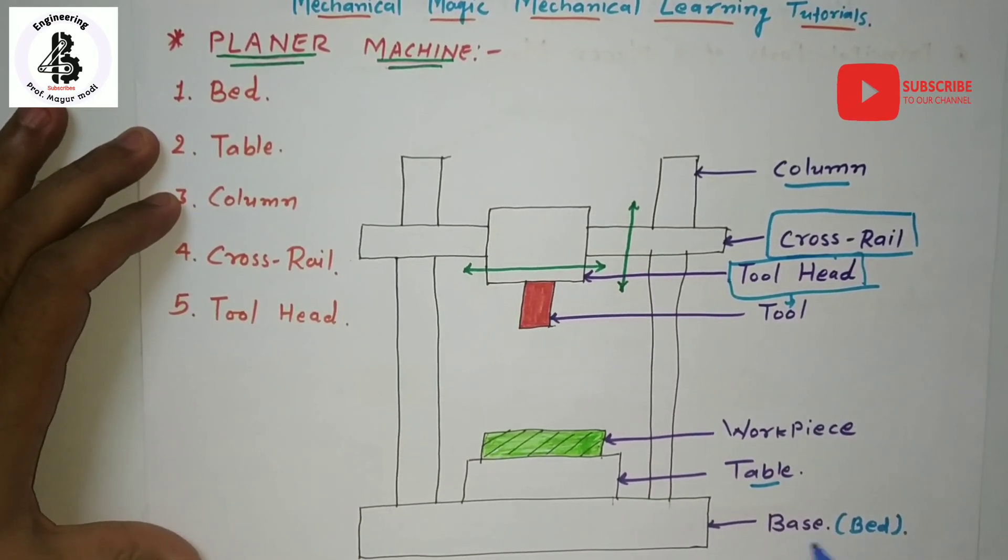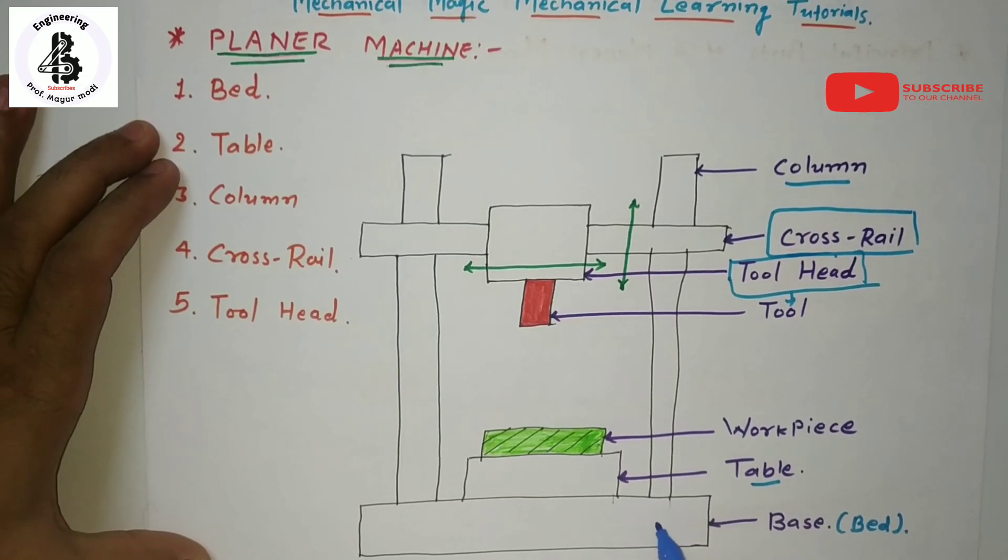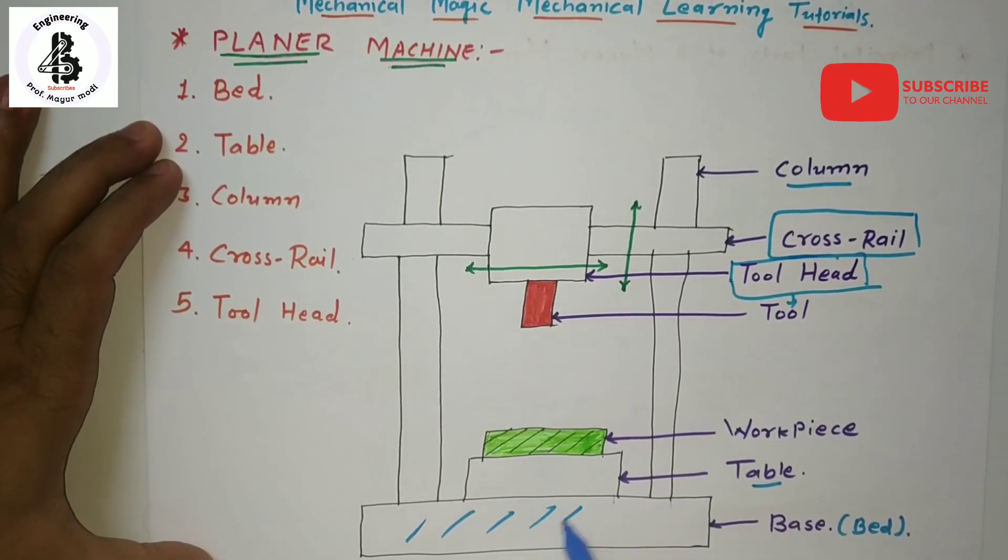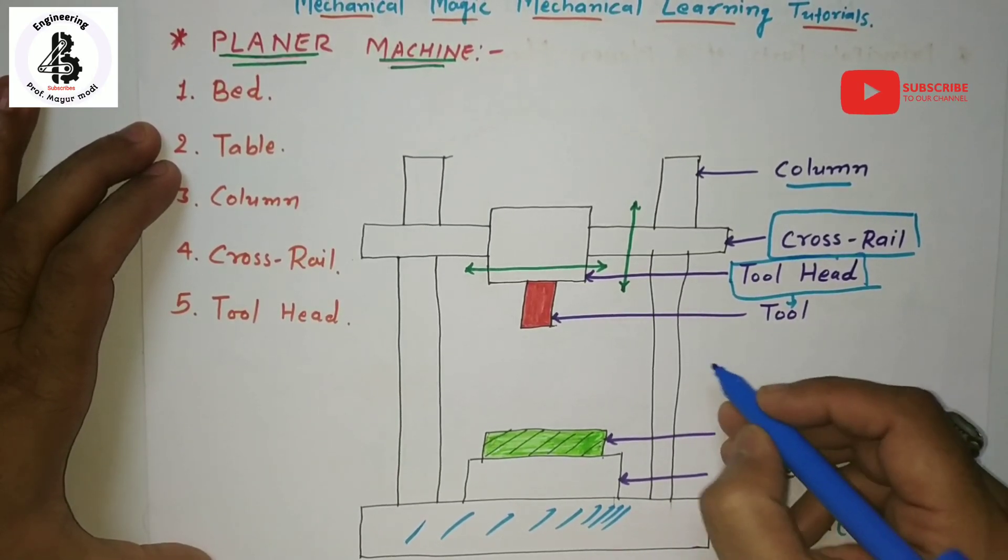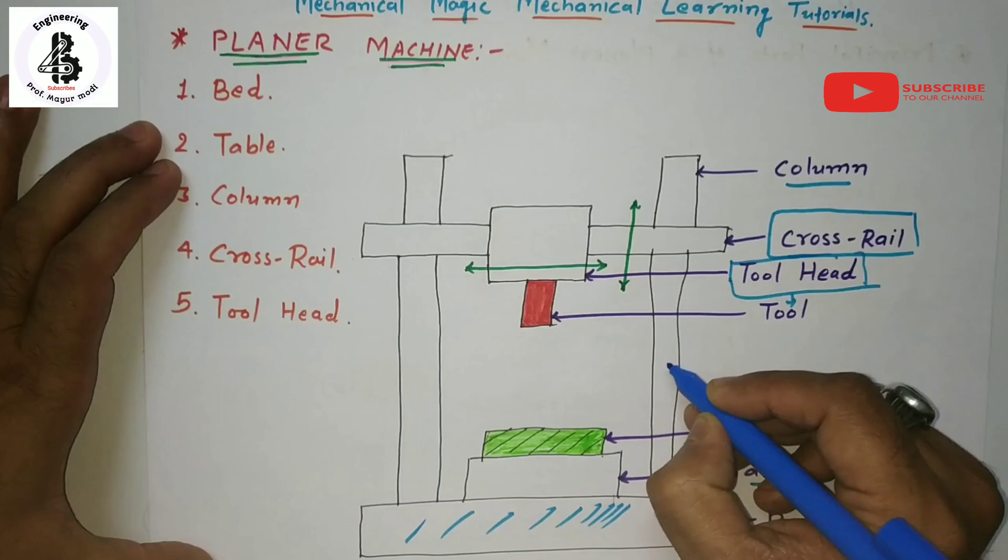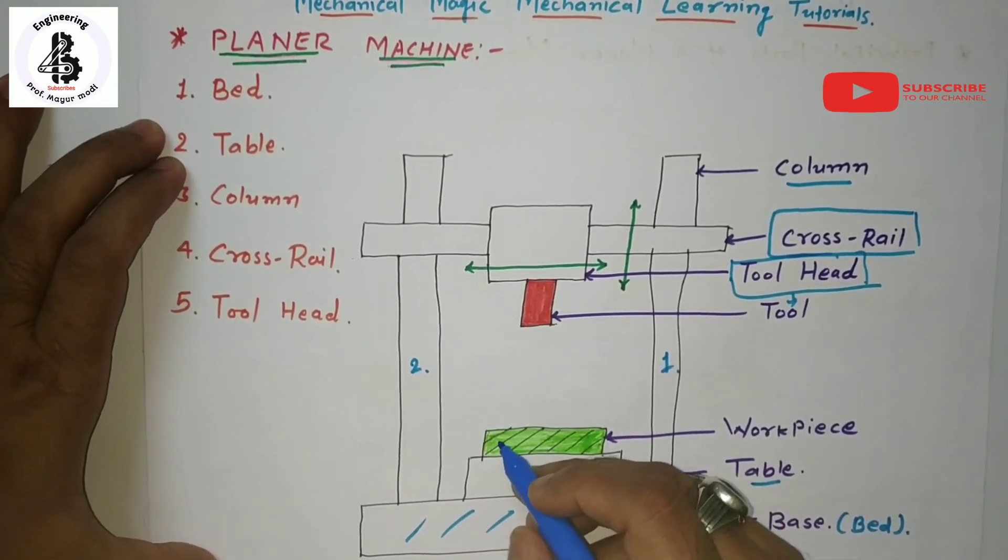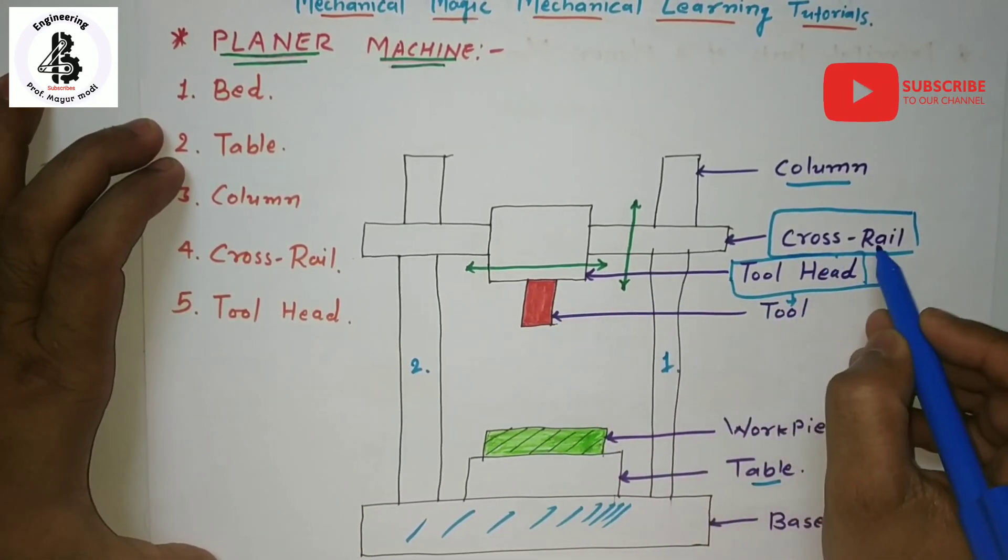The base or the bed. The bed of the planer is very large in size and heavy in weight, and it supports the columns. Column number one and column number two are being used, and all other moving parts like the cross rail mechanism, tool head and tool, and the workpiece.